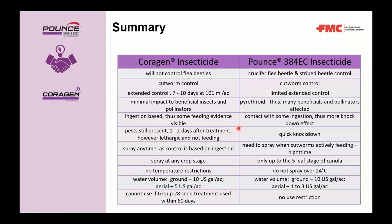A stewardship note for Corrigan: because there are Group 28 seed treatments such as Lumiderm, it is good practice — and on the label — not to follow a Group 28 seed treatment with a Group 28 foliar insecticide within 60 days. With Pounce, there are no such restrictions.